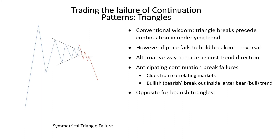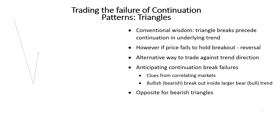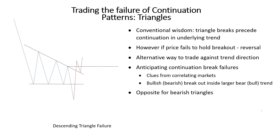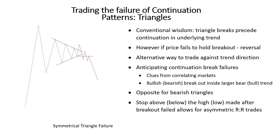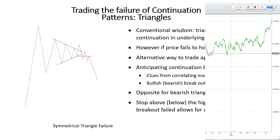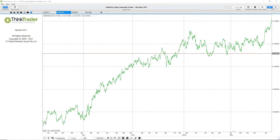Triangle breakout failures can happen in both directions, and this is how a failure would look in a downward trend — but the idea is the same, as in both cases we are looking to trade the trapped trader. When it comes to trading such failure patterns, the stop loss needs to be placed just above the high of the failed breakout attempt for a bearish trade, since if price were to revisit that level again it is most likely a genuine breakout. With a tight-ish stop loss the potential reward could be considerably larger if the trade is taken at good levels, which I will discuss further as we move over to the charts.